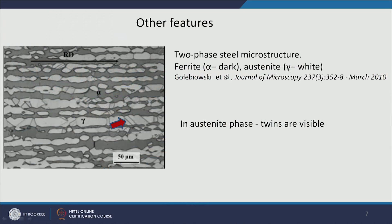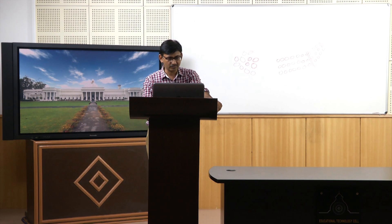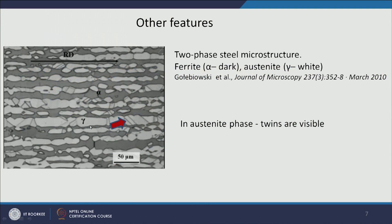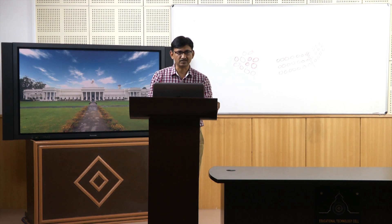Ferrite is dark, and austenite — another type of phase — is white. This image is taken from a journal paper. One phase, alpha, is dark and the other phase, gamma, is white. You also see another feature which we call twins. The grain boundary usually has a curved feature, but twin boundaries are very straight and usually come in pairs. These are special types of boundaries, other than the ordinary grain boundaries we just discussed.